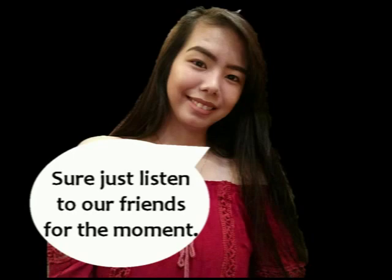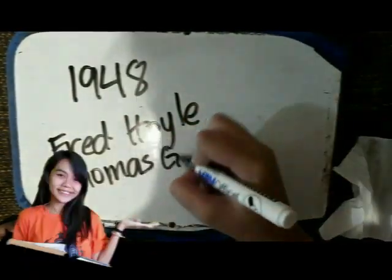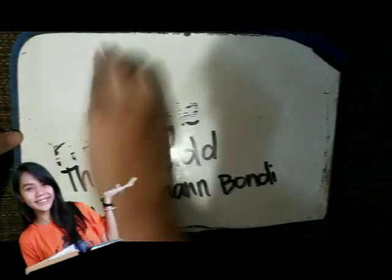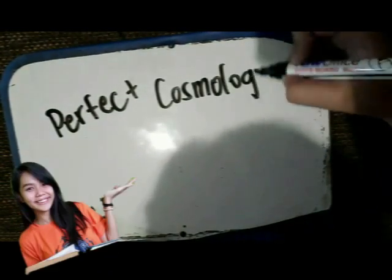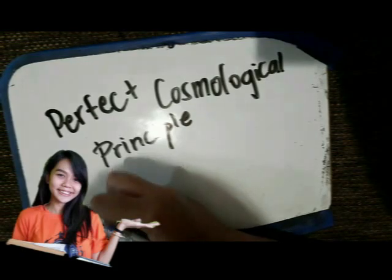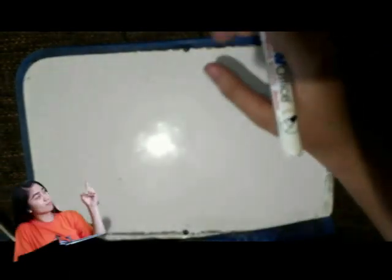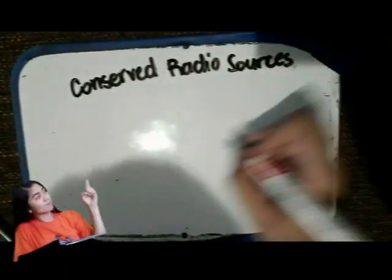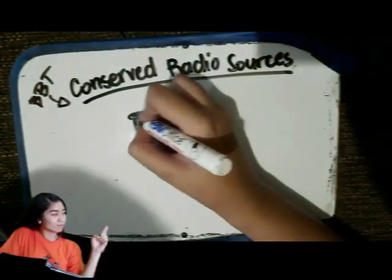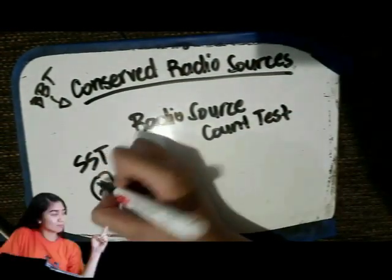Sure. Please just listen to our friends for a moment. The steady state model of the universe was proposed in 1948 by Bondi and Gold and by Hoyle. Bondi and Gold adopted the perfect cosmological principle, adding the assumption that the universe was the same at all times — homogeneous and isotropic. The universe is observed to be expanding, so if the density remains the same, matter must be continuously created. The steady state model has no adjustable parameters to correct for this, whereas the Big Bang model does, and observations of radio sources began to favor the Big Bang.